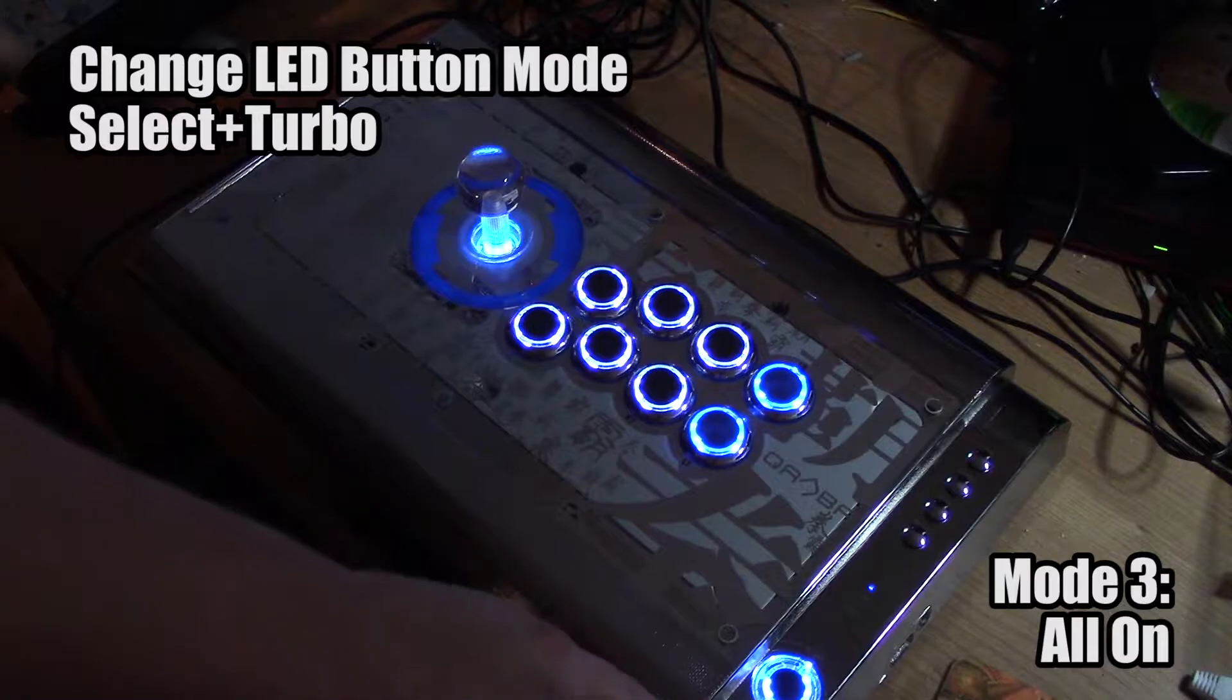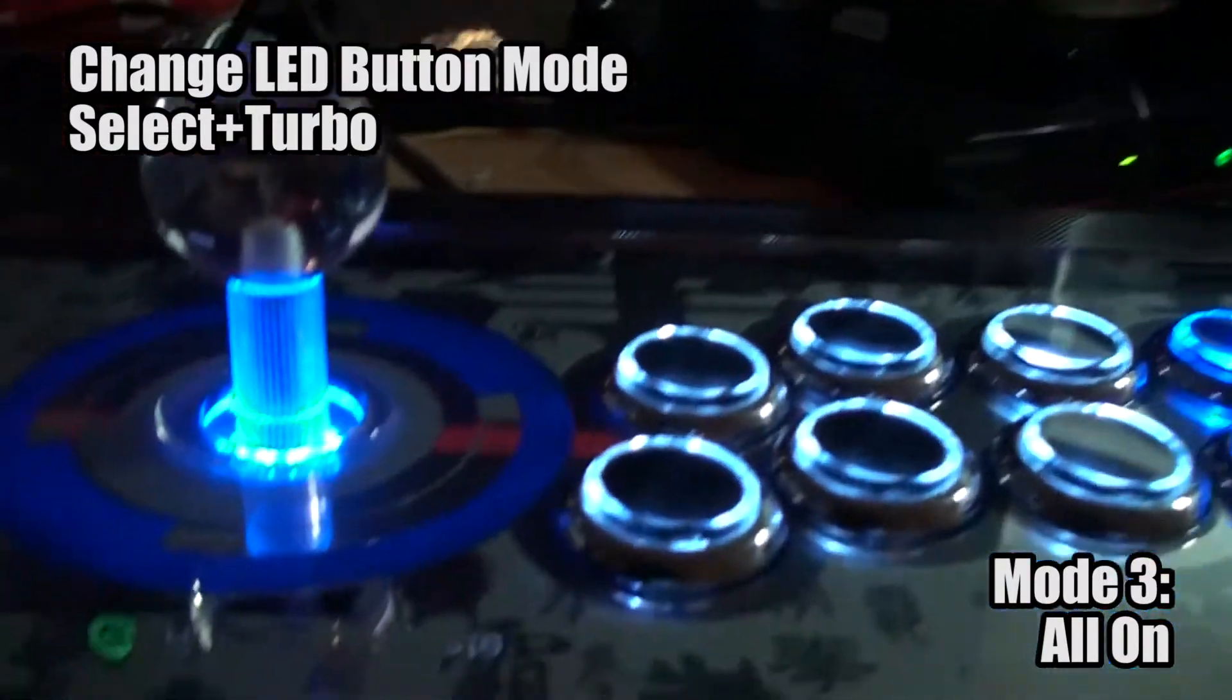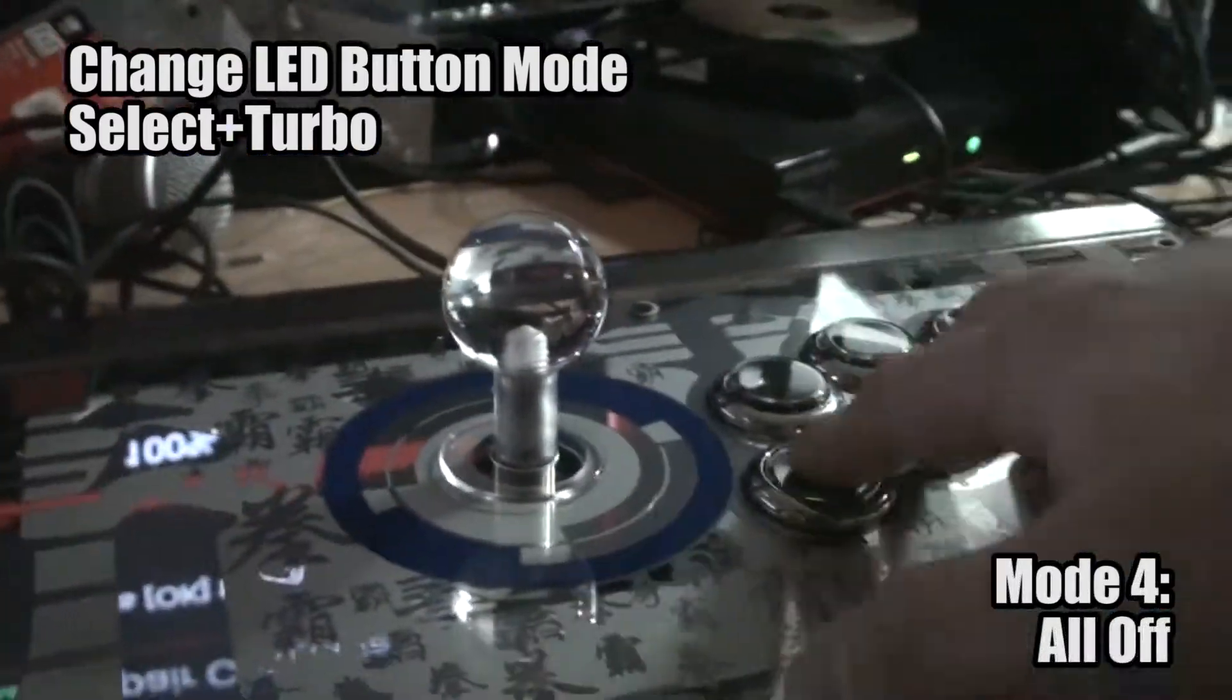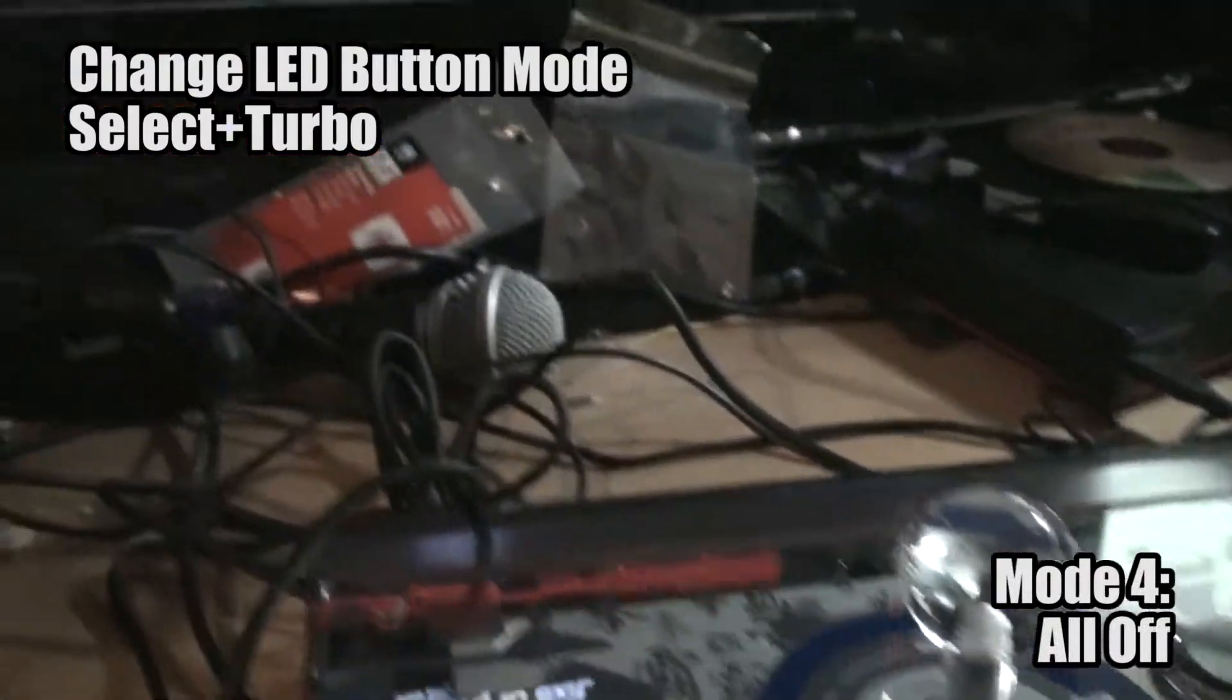If you push turbo and select again, all the LEDs come on. So you guys can see the start button and all the other buttons are illuminated. And then if you push it one more time, no buttons work. Or the buttons all work, but there's no illumination.